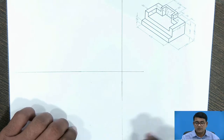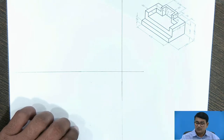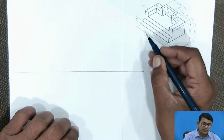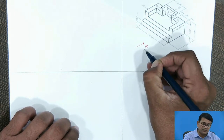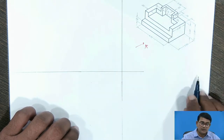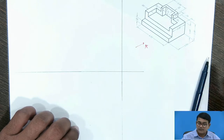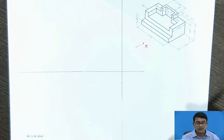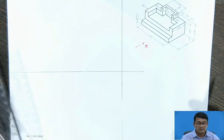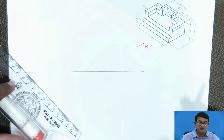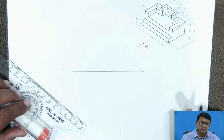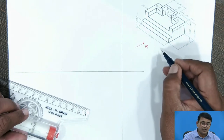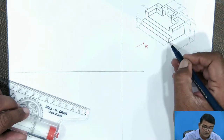So this is a new object. In the direction of arrow X, you have to draw the front view. Just like the previous one, our main intention is to draw the front view. When you have to draw the front view, calculate the dimensions.